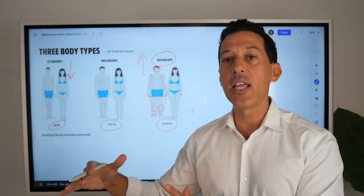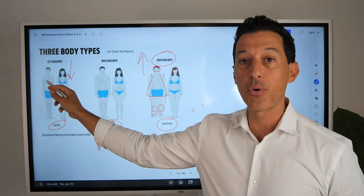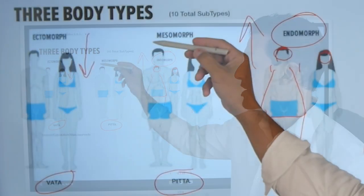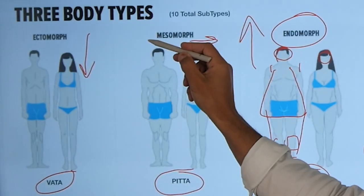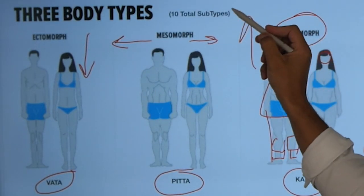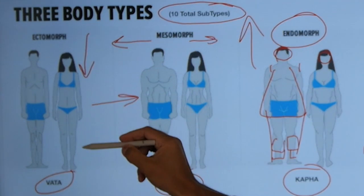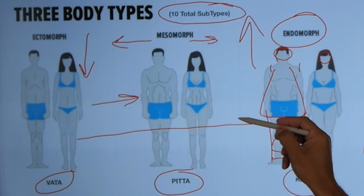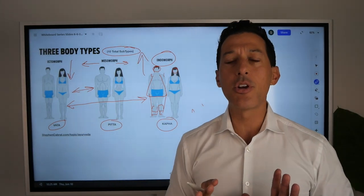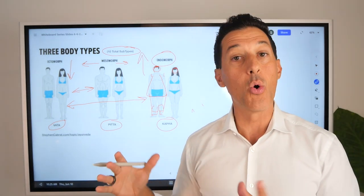Anybody can lose body weight if they try, but the ectomorph has to be careful — they have to be careful with overdoing fasting. The endomorph body type does better with a longer fast, and I'll be teaching more about that. Mesomorphs are right in the middle; they could go either way, trending more towards the vata or more towards the kapha — kapha being the endomorph. Because there are 10 total subtypes, meaning there's a blending of the ectomorph and mesomorph, and a blending of the ectomorph and endomorph, and vice versa.